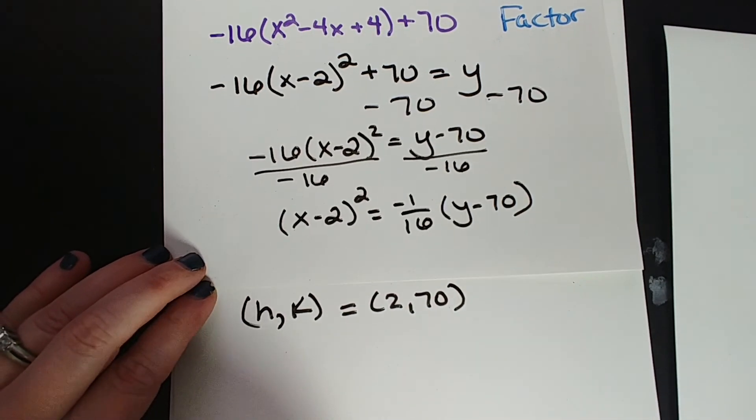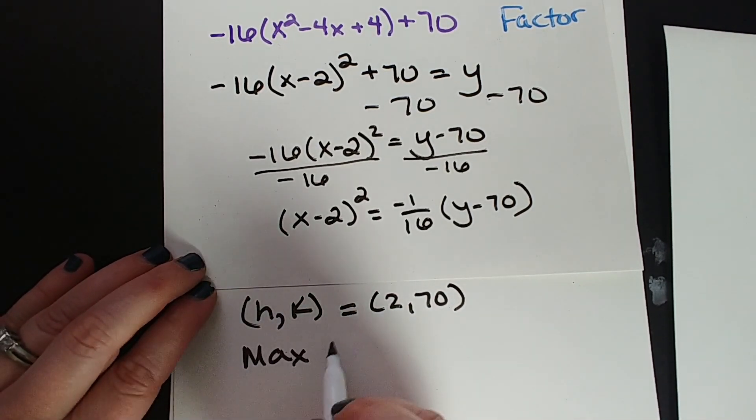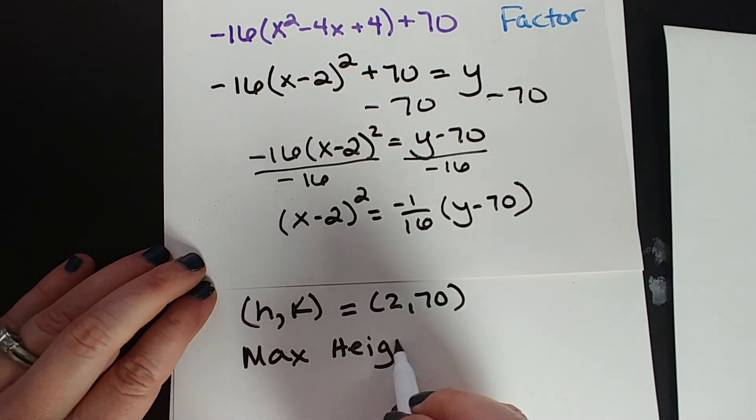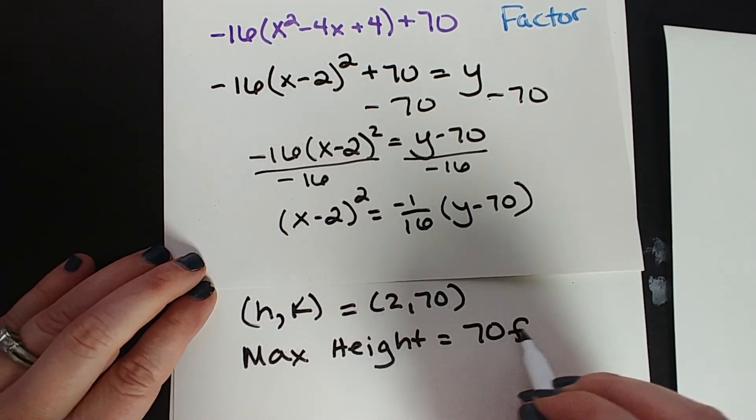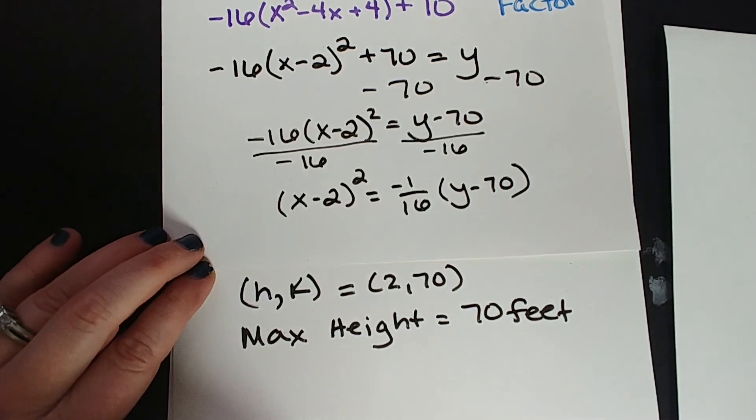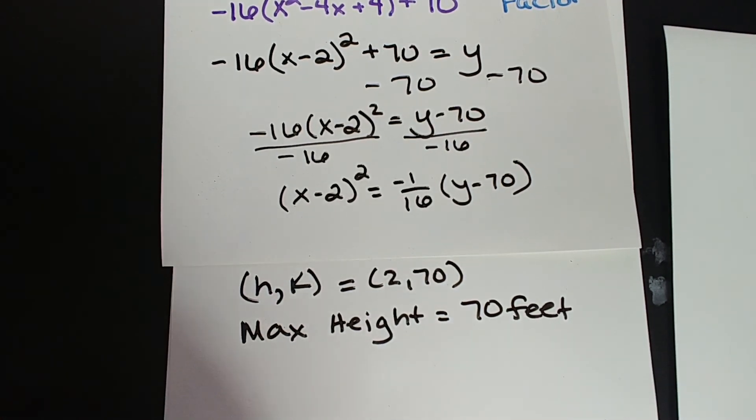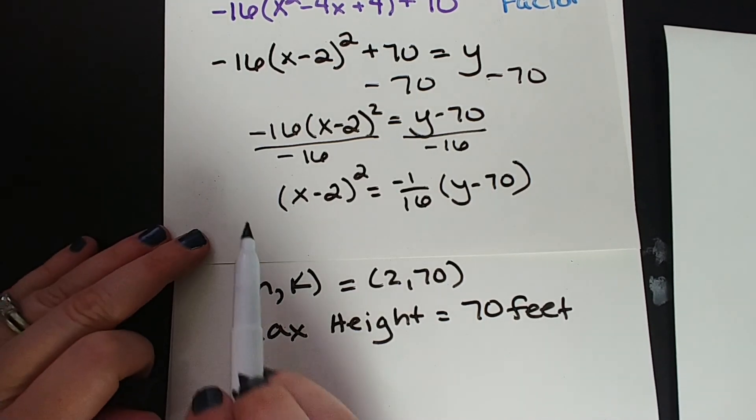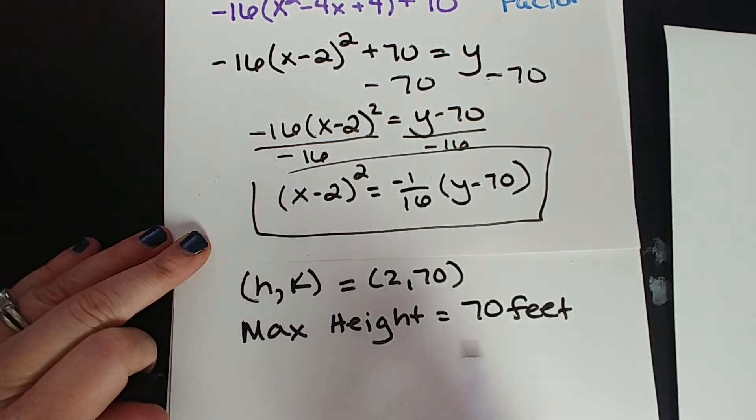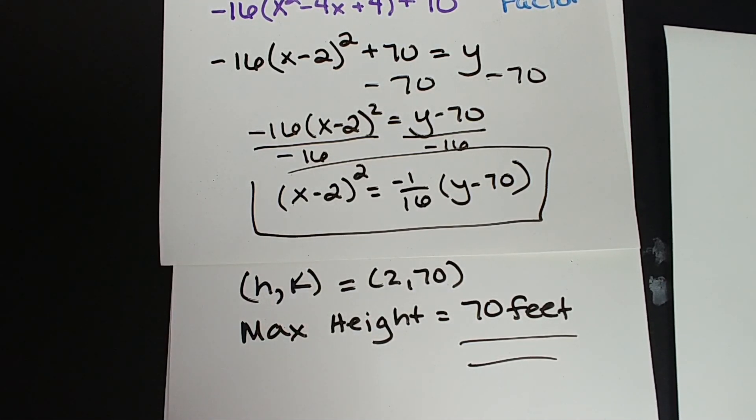So the height, the maximum height for this hot dog that this fanatic is throwing is 70 feet. I don't think anybody's going to eat the hot dog that he threw when it was 70 feet in the air, but maybe. I mean if you catch it and it didn't touch the ground, I suppose this is fine. Anyway, here's your answer. Standard form, 70 feet is how high this thing throws hot dogs.